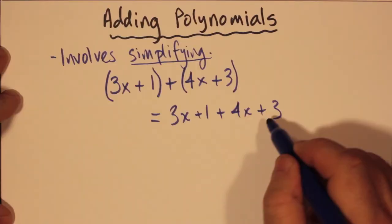Removing the brackets is simple. Just remove them. Nothing happens in this case. So we end up with 3x plus 1 plus 4x plus 3 as just an expression with no brackets.